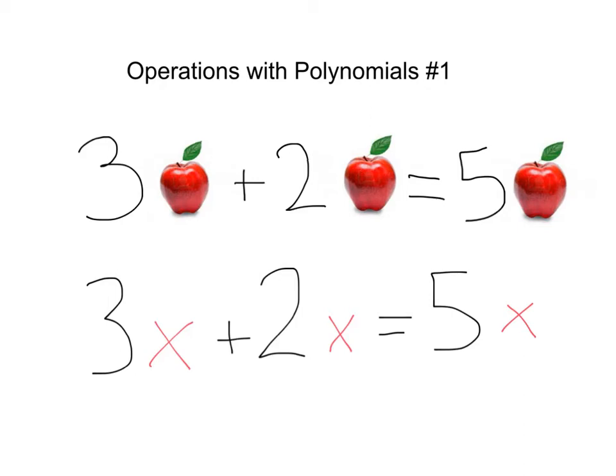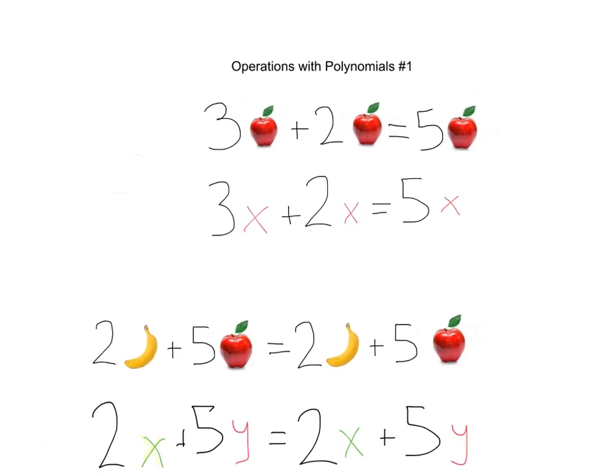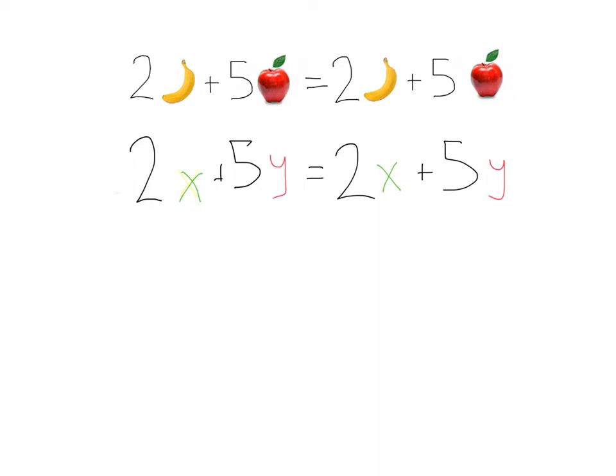So one day something crazy happened. I went out to the store and I bought two bananas, but we still had our five apples that we had just picked. So I wanted to see how much fruit we had. Well, we had two bananas plus five apples, and we had a total of two bananas and five apples. We didn't have seven apples, we didn't have seven bananas, we didn't have seven banana apples. We just had two bananas and five apples.